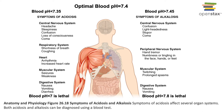Blood pH greater than 7.45 is known as alkalosis. Alkalosis leads to disruption of the nervous system functions as well, leading to over-excitability of the nervous system which causes abnormal tingling sensations, muscular twitches and spasms, lightheadedness, anxiety, and confusion. In extreme cases alkalosis can lead to loss of consciousness or even death. The effects of alkalosis also include effects on the digestive system that can cause nausea and vomiting.